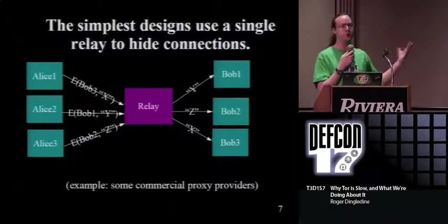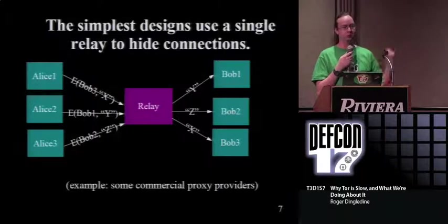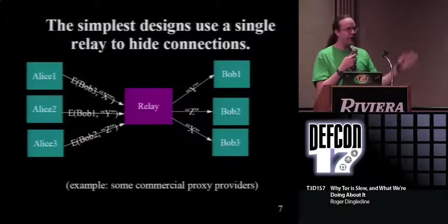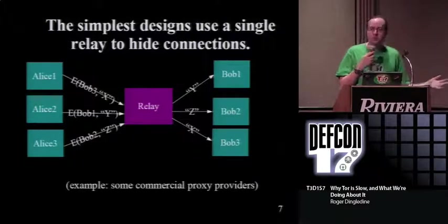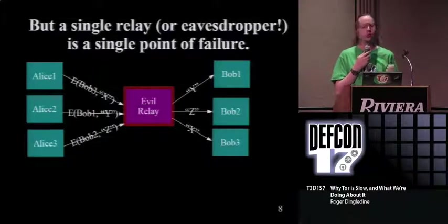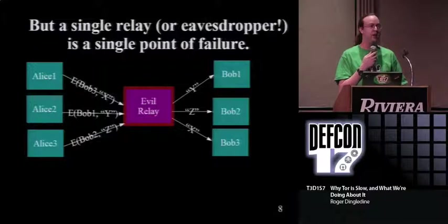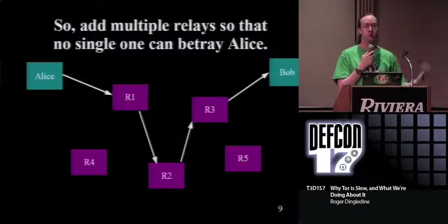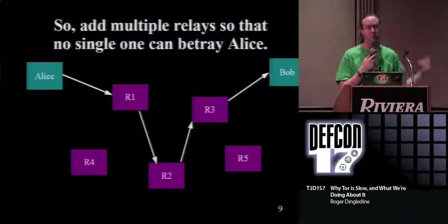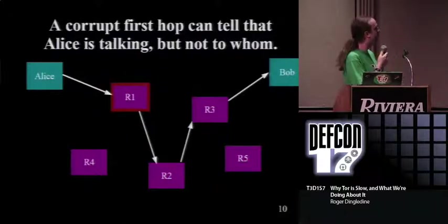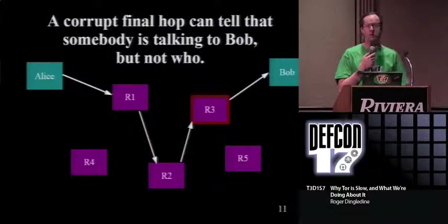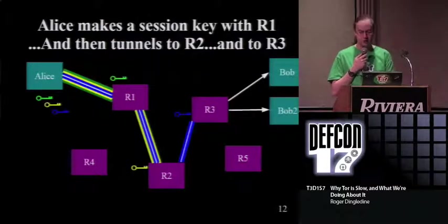How do you build one of these? The easy answer is put a computer somewhere and relay traffic through it - commercial companies promise not to look, not to log, not to tell. We want something stronger: distributed trust. By routing traffic over more than one relay, no single relay learns about both Alice and Bob. If relay R1 is bad, he knows Alice is using Tor but not what she's doing. If R3 is bad, he knows someone is talking to Bob but not who. If both are bad, we're in trouble. There's crypto involved, but that's the crash course on Tor.